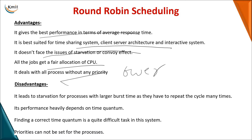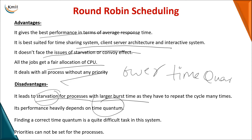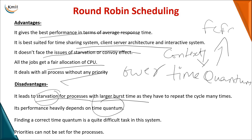The disadvantage is that starvation can occur when burst time is very large. The main issue is choosing the right time quantum: if too small, there will be excessive context switches; if too large, it behaves like FCFS, where a process runs until completion. Fixing the time quantum is a tedious job, and you also cannot set priorities since all processes are treated equally.